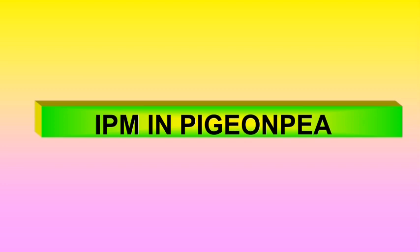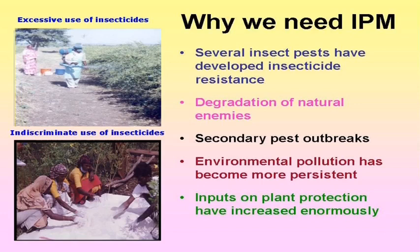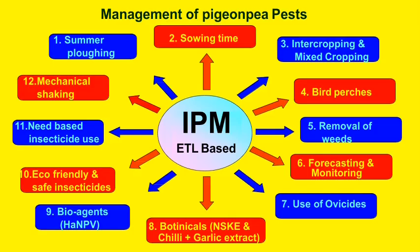These are the different major and minor pests of the toor crop. Now for Integrated Pest Management (IPM) — how IPM is used to control or manage different insect pest populations in red gram. Why is IPM necessary? There are some important reasons: several insect pests have developed insecticide resistance; degradation of natural enemies due to the continuous use of insecticides; secondary pest outbreaks; environmental pollution has become more persistent; and inputs on plant protection have increased enormously.